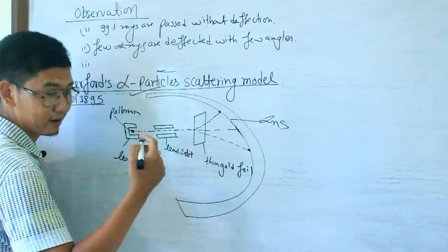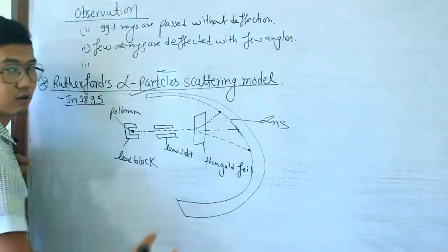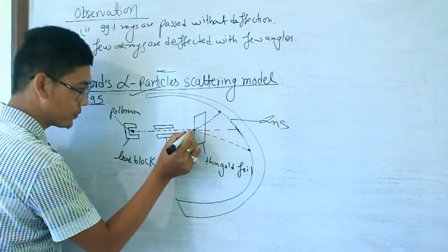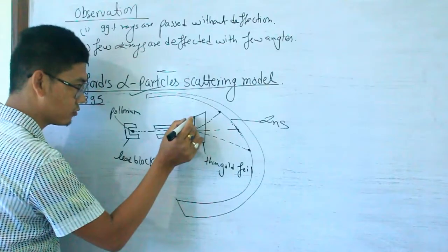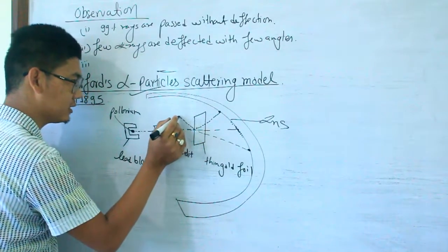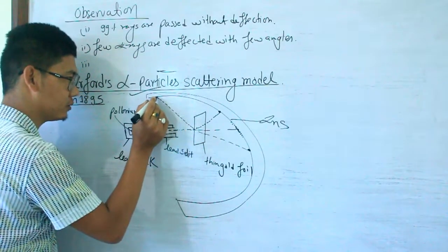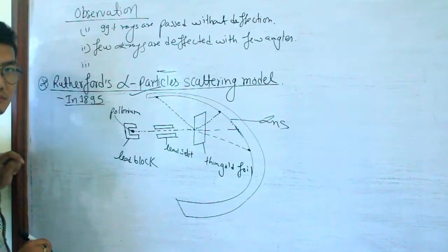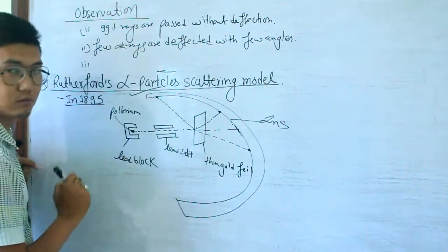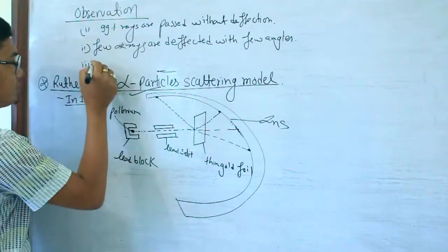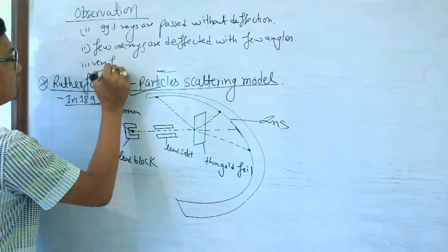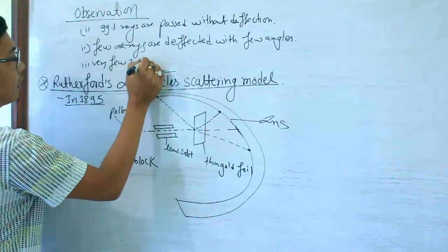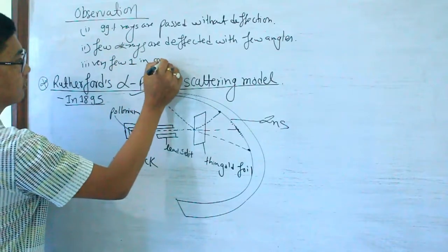The third observation is that very few — approximately 1 in 1 lakh (100,000) — alpha rays are rebounded back from the gold foil.